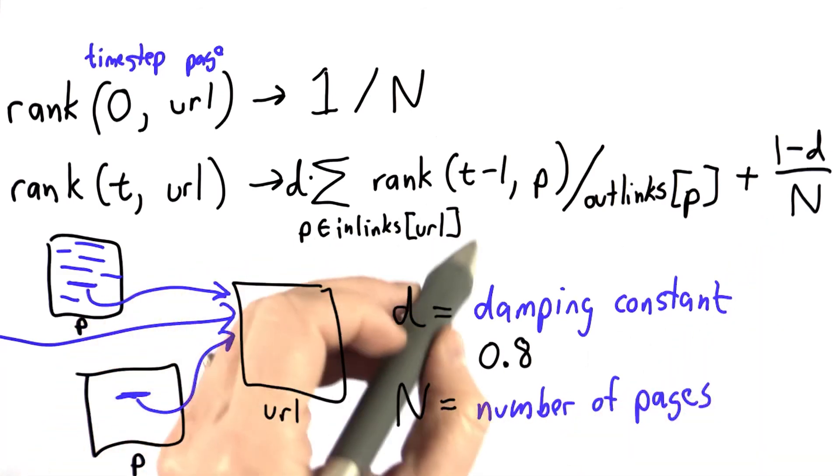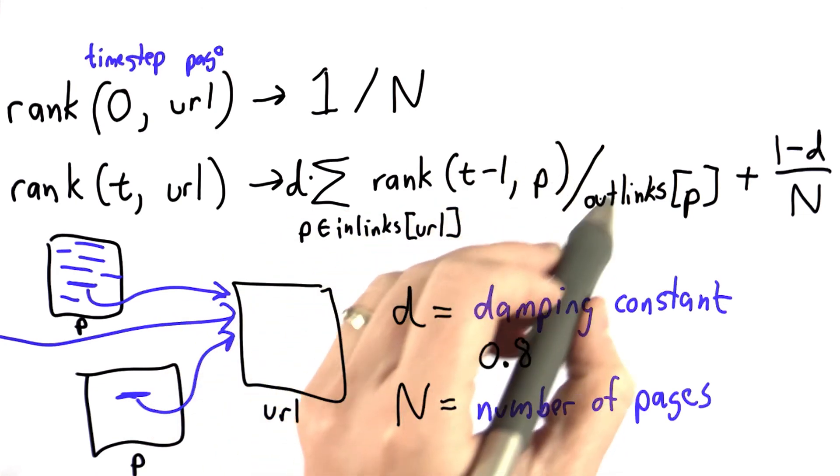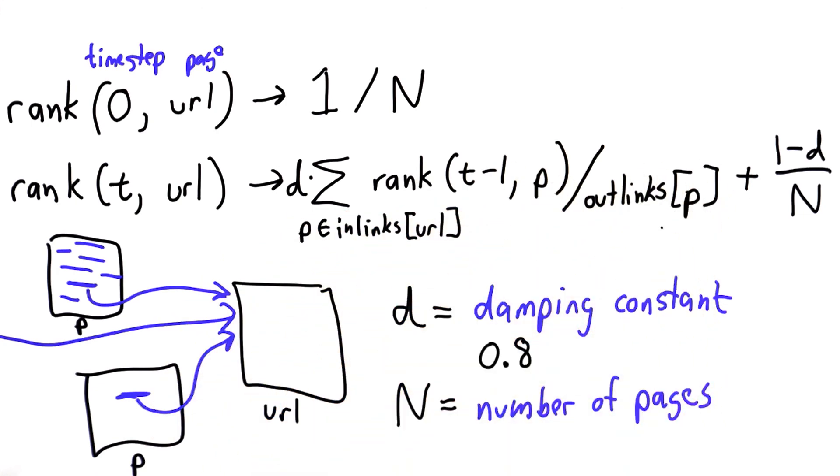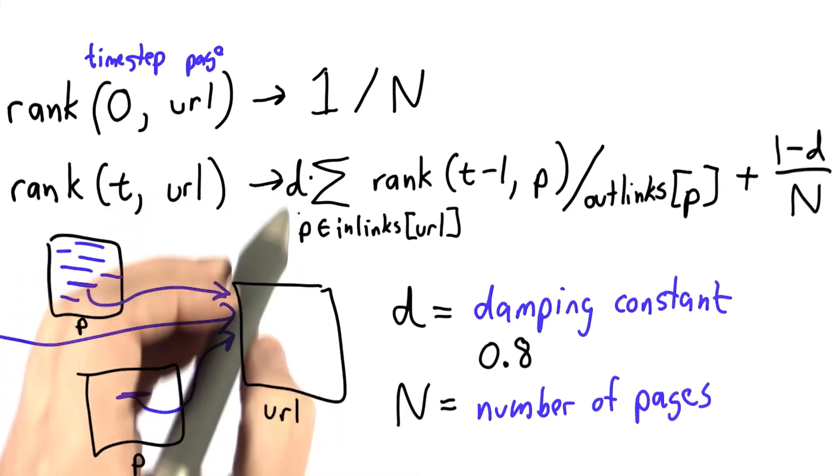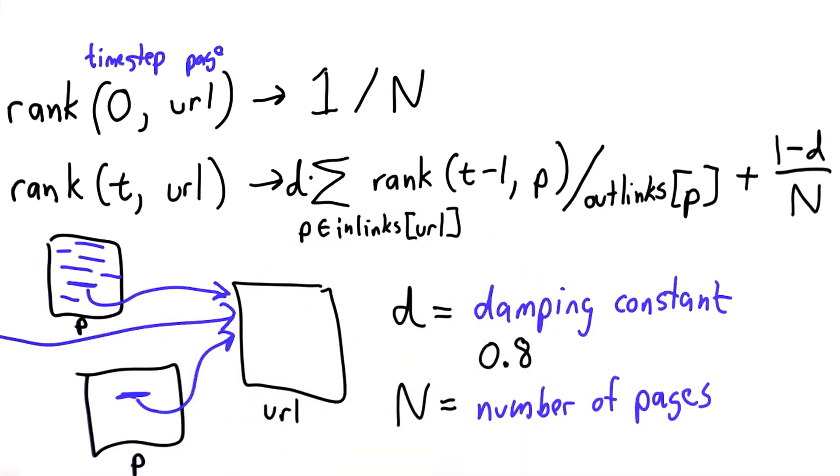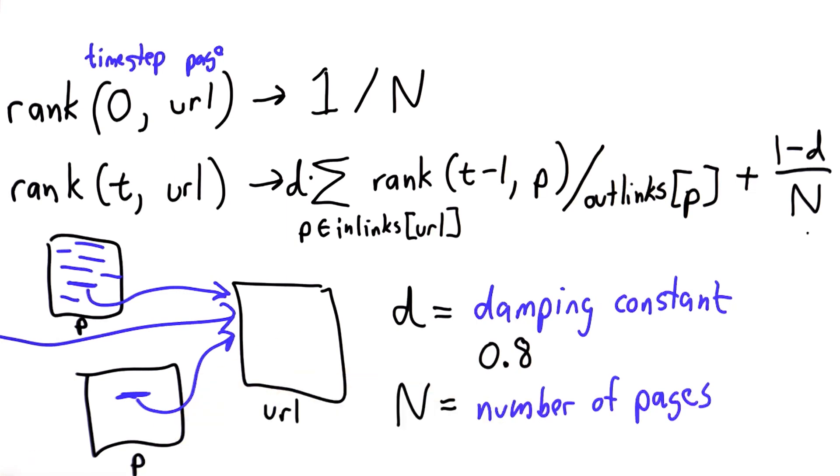For each link that links to us, we take its popularity on the last step, divide that by the number of outlinks it has, and multiply that by our damping constant. That gives the probability that this page was selected by the random web surfer. Then we add the term that takes into account the random web surfer might have started over from scratch and picked a new random page.